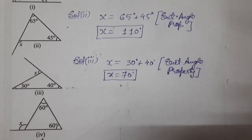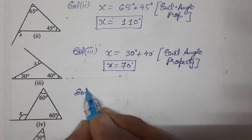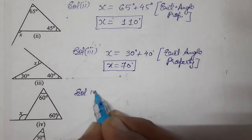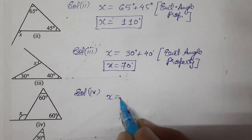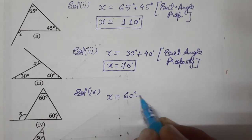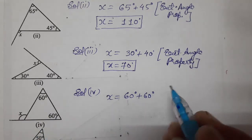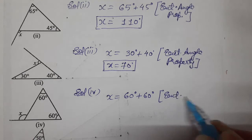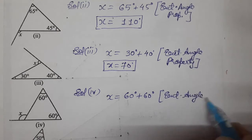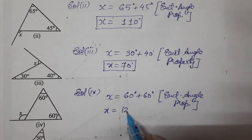Similarly, for the fourth part, this is again an exterior angle, and it equals the sum of two interior opposite angles. These two angles are equal — both are 60°. By the exterior angle property, X equals 60 plus 60, which gives 120°.